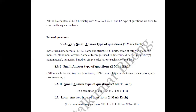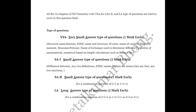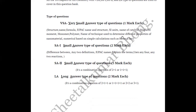We will start with these types of questions in the next video. The question structure includes: formula, IUPAC name, what is the structure, the name of the catalyst, magnetic moment, the name of the monomer or polymer, and the name of the technique used to determine different properties of nanomaterials.